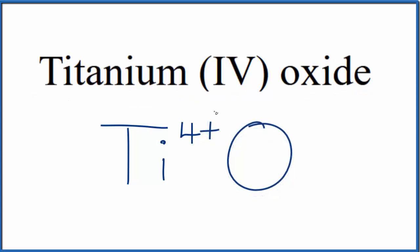We know that the titanium is 4+ because of the Roman numeral. Oxygen, that's in group 16, sometimes called 6A on the periodic table, so it's always 2-.